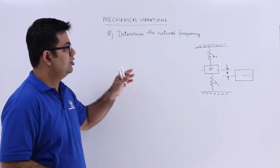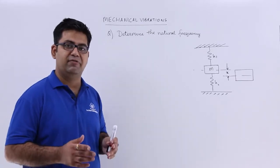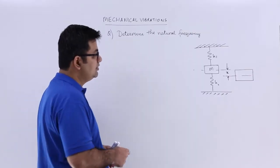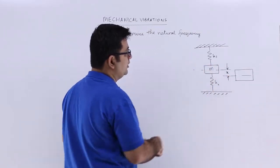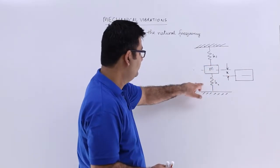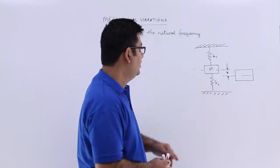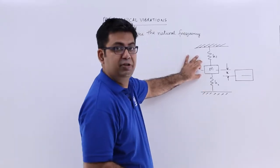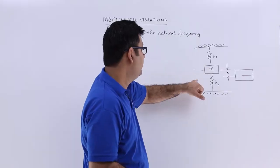Now let's look at the first question on determining the natural frequency of a vibrating system. So this is a vibrating system in which you have two springs and this mass is at the center, connected by these two springs in this fashion.